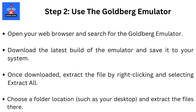Step 2: Use the Goldberg Emulator. Open your web browser and search for the Goldberg Emulator. Download the latest build of the emulator and save it to your system. Once downloaded, extract the file by right-clicking and selecting Extract All. Choose a folder location, such as your desktop, and extract the files there.